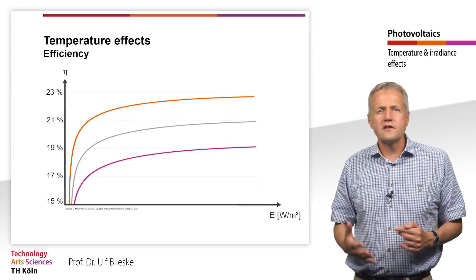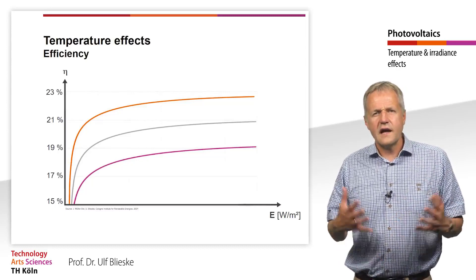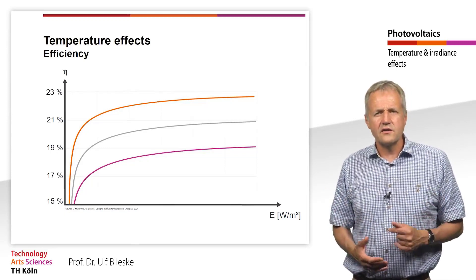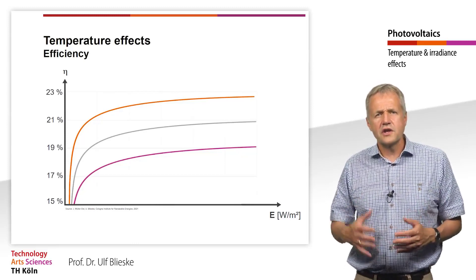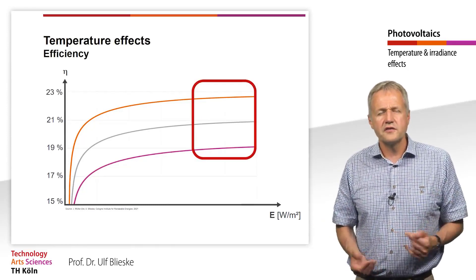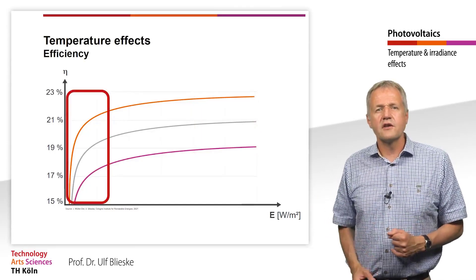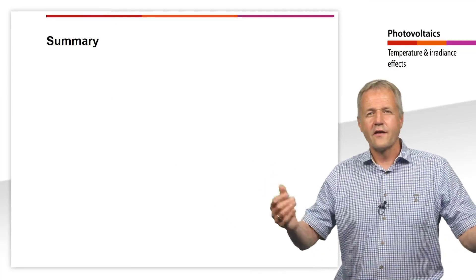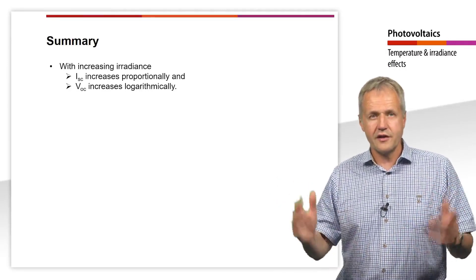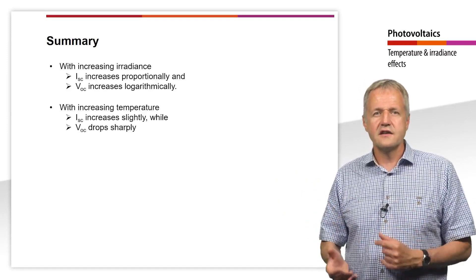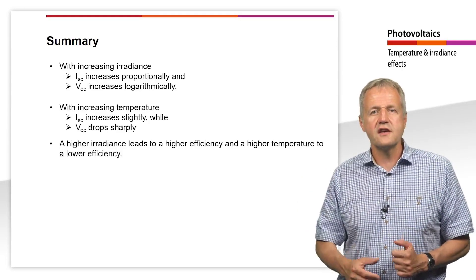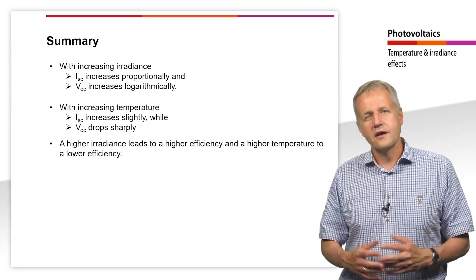Finally, let us consider the influence of temperature on the efficiency of a solar cell. In the diagram shown here, the influence of temperature and irradiance on efficiency are illustrated. Due to the linear decrease of the MPP power, efficiency also decreases linearly with temperature. It can be seen that at high irradiances, the influence of temperature on efficiency is predominant, while at low irradiance, the influence of irradiance is stronger. To summarize: with increasing irradiance, ISC increases proportionally and VOC increases logarithmically. With increasing temperature, ISC increases slightly while VOC drops sharply. Overall, higher irradiance leads to higher efficiency, and higher temperature leads to lower efficiency.